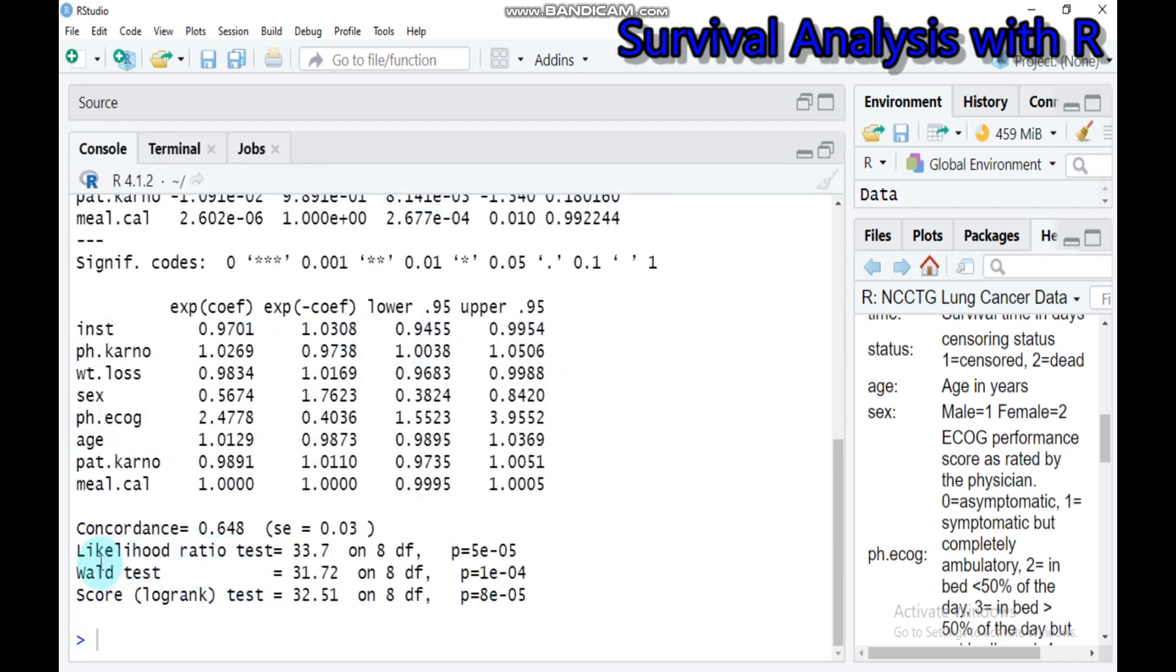As you see here, the likelihood ratio test, the Wald test, and the score or log rank test are statistically significant. You can check all these covariates, the factors that affect the survival.